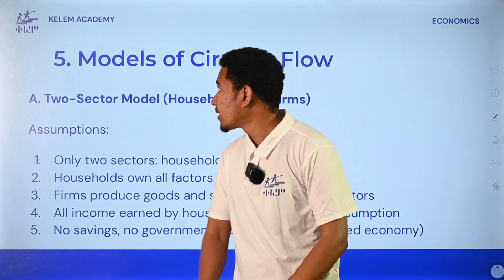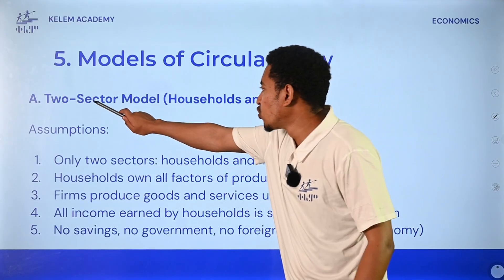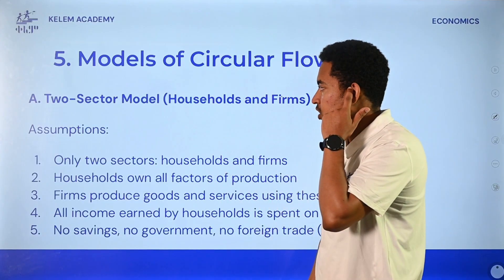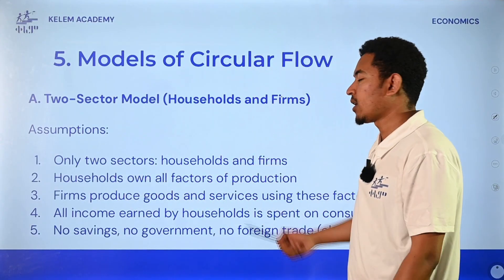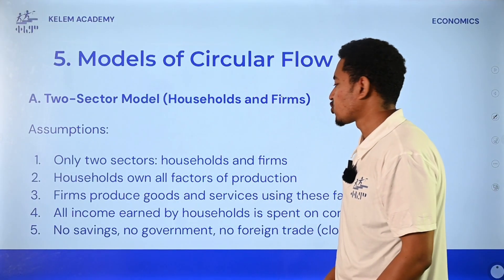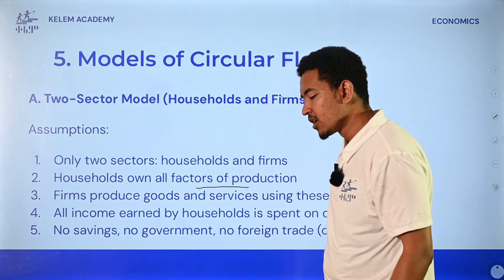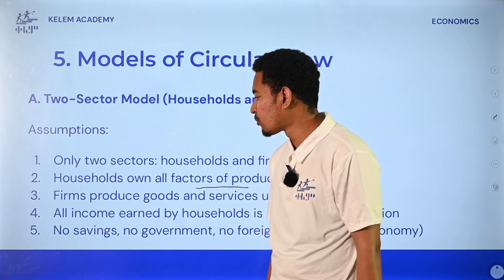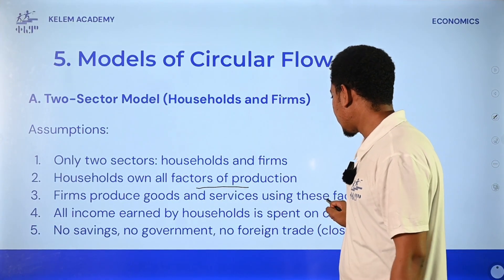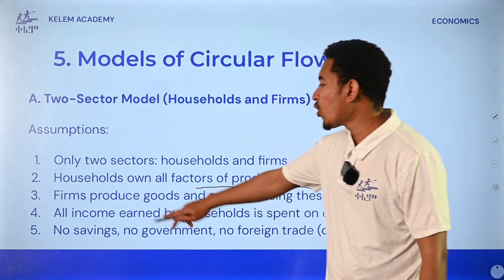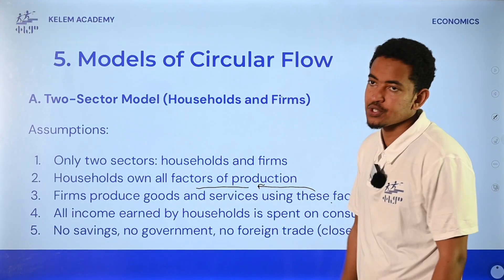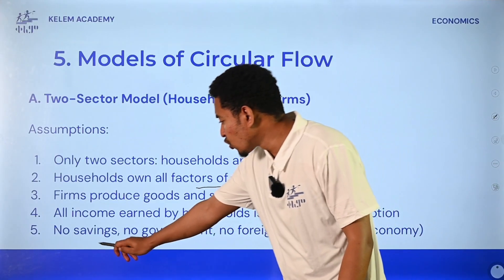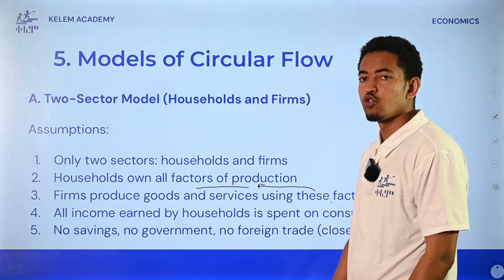The next step is the model of circular flow. The two-sector model - the main assumption: only two sectors. Households own all factors of production: labor, capital, land, entrepreneurship. All income earned by households is spent on consumption. No savings, no government, no foreign trade - closed economy.